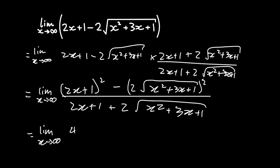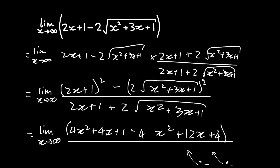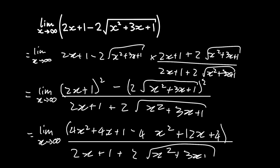Simplifying the numerator, we get the limit as x approaches infinity of 4x squared plus 4x plus 1 minus — now this 2 gets squared — 4 into x squared plus 3x plus 1. Distributing that 4, I get minus 4x squared plus 12x plus 4. Still over the same denominator: 2x plus 1 plus 2 into the square root of x squared plus 3x plus 1.